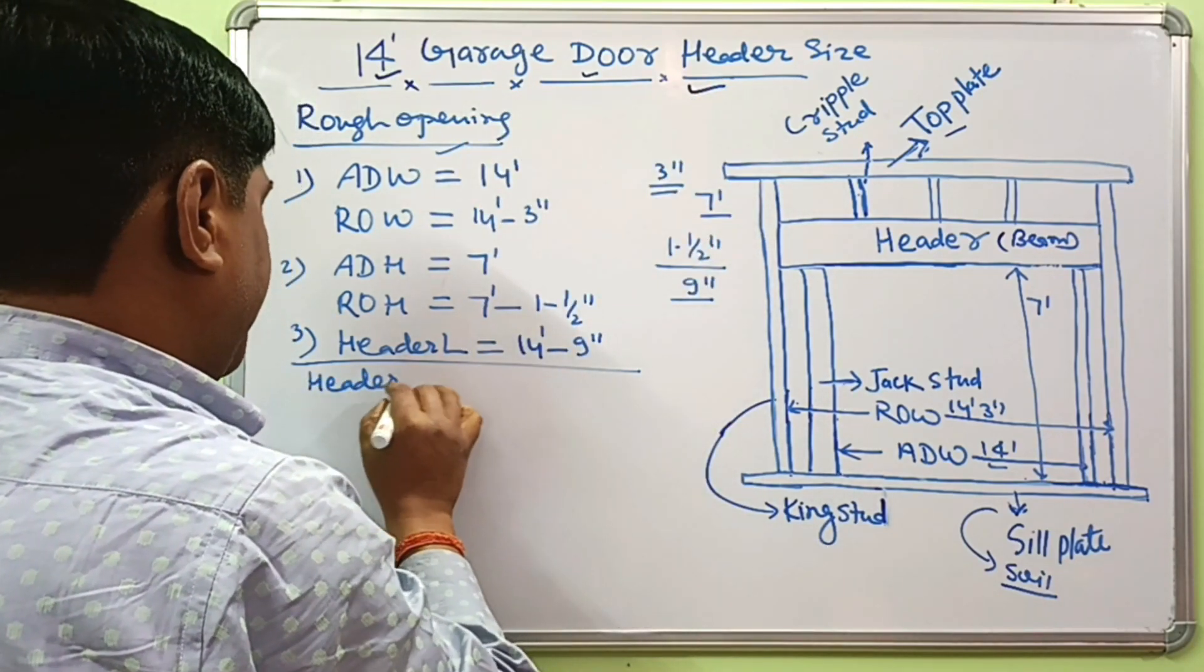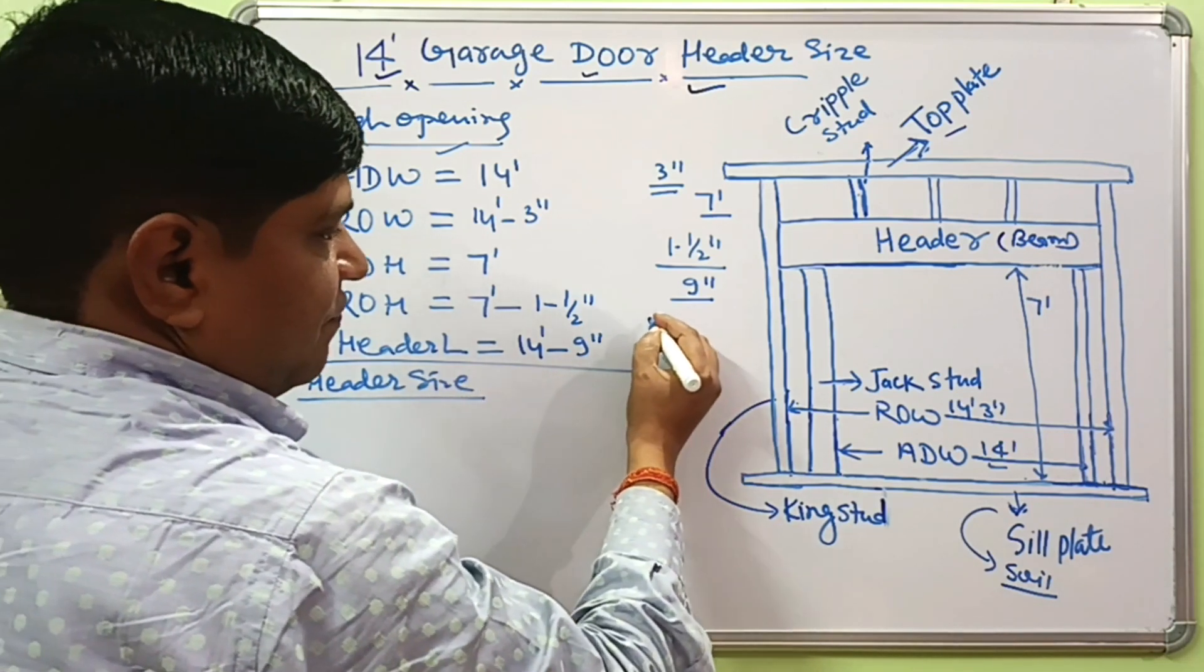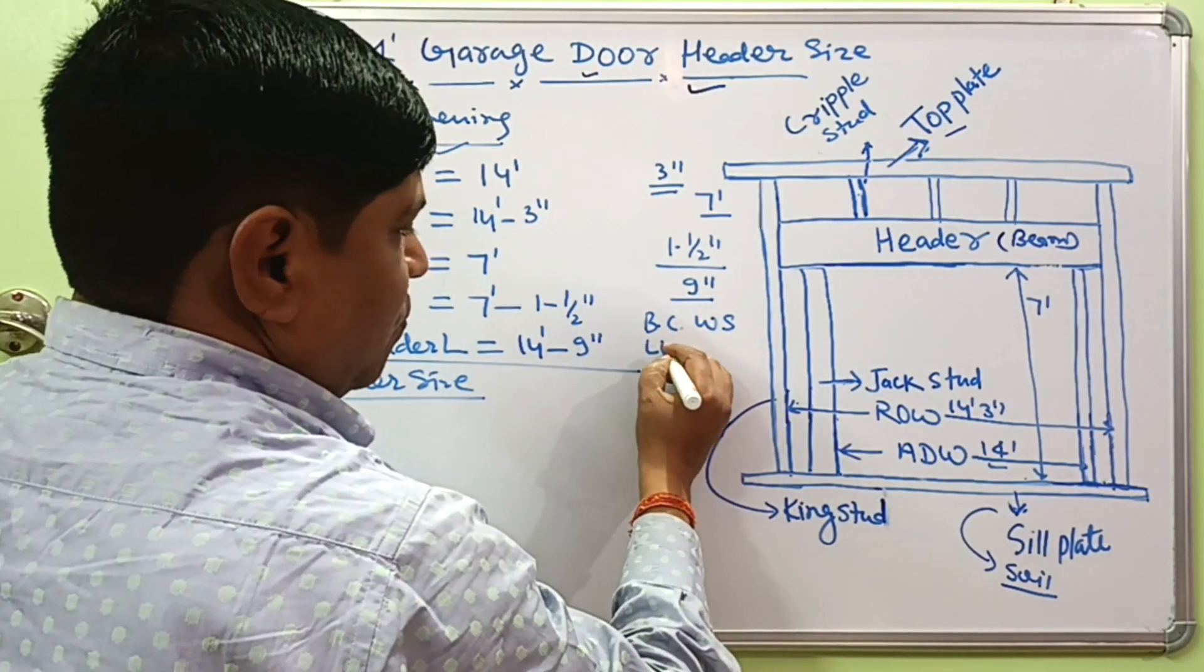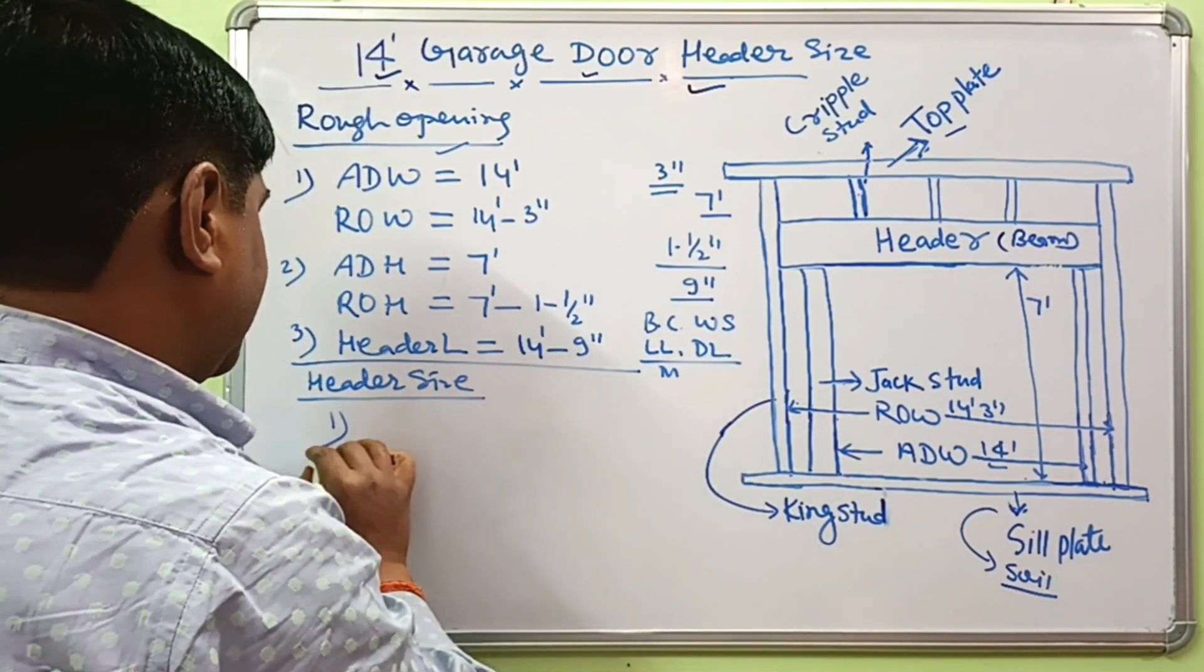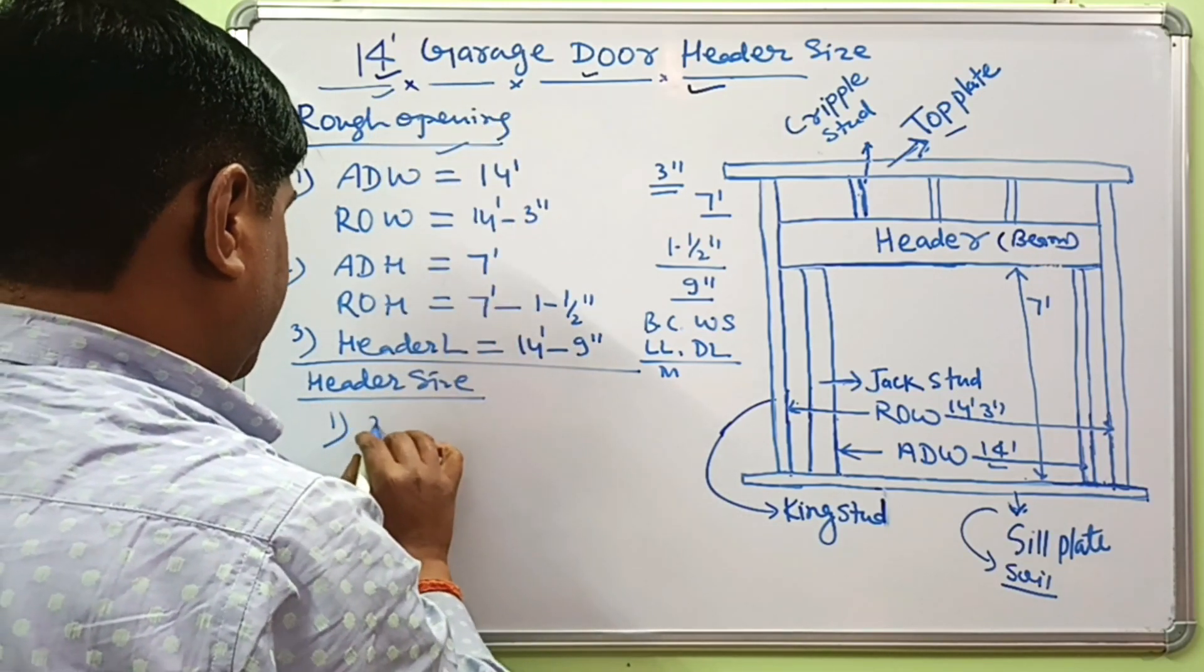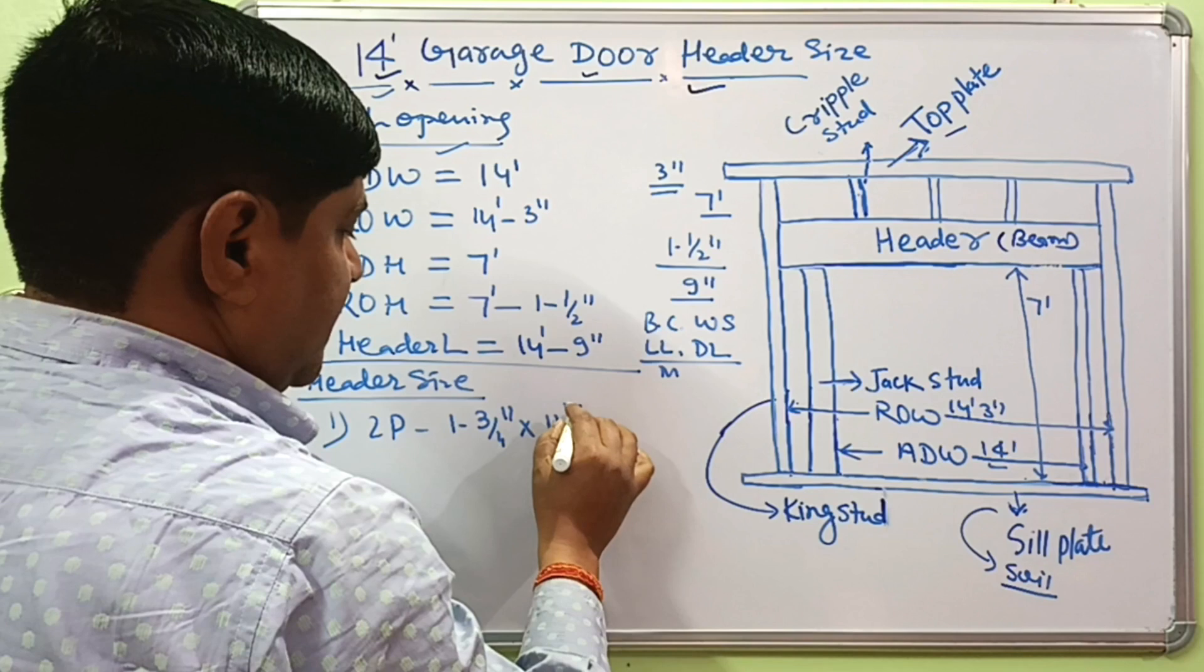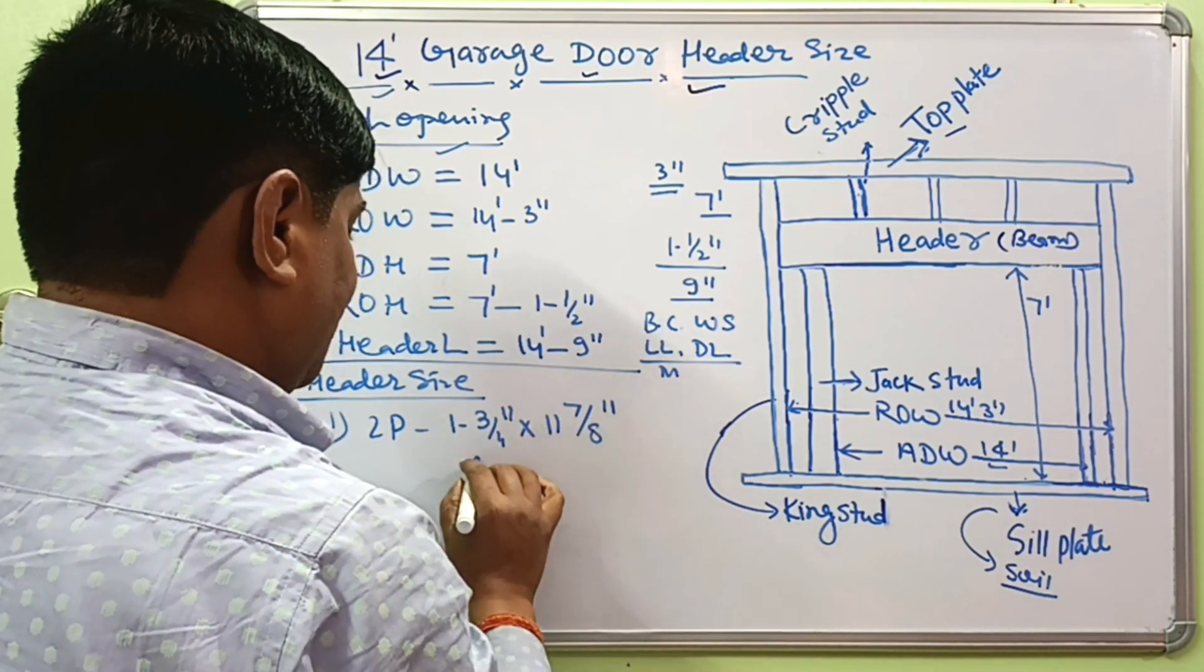You know that header size depends on different conditions like building code, different load specifications for the house, live load, dead load, and many other factors. But our suggestion is: if your door width is 14 feet, then you can use two pieces of 1 and 3/4 inches by 11 and 7/8 inches.